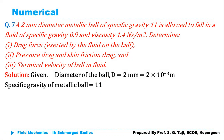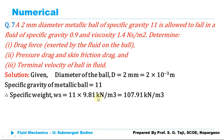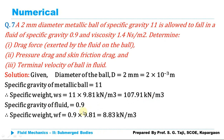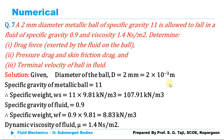From the given data: specific gravity of the metallic ball is 11, so specific weight = 11 × 9.81 = 107.91 kN/m³. Specific gravity of the fluid is 0.9, so specific weight of fluid = 0.9 × 9.81 = 8.83 kN/m³. Dynamic viscosity is 1.4 N·s/m².